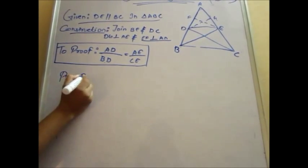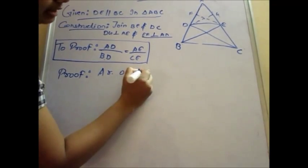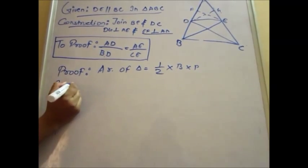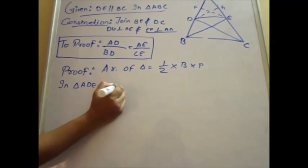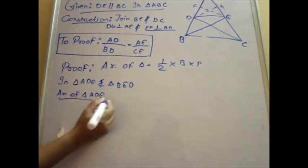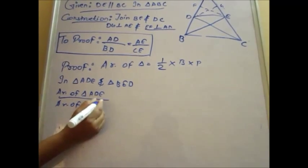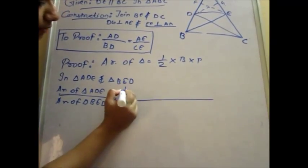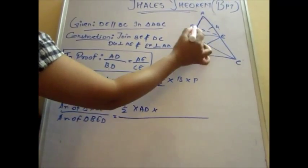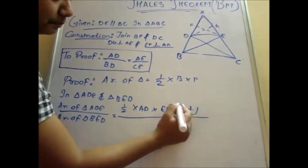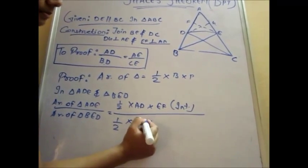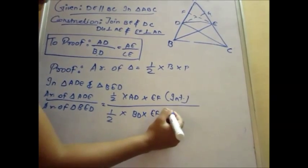Now proof. In earlier classes we have studied that area of a triangle equals half into base into perpendicular. In the same way, we will take the ratio of area of triangle ADE upon area of triangle BED. In triangle ADE, the base is AD and the perpendicular is EF. In triangle BED, the base is BD and the perpendicular is EF.